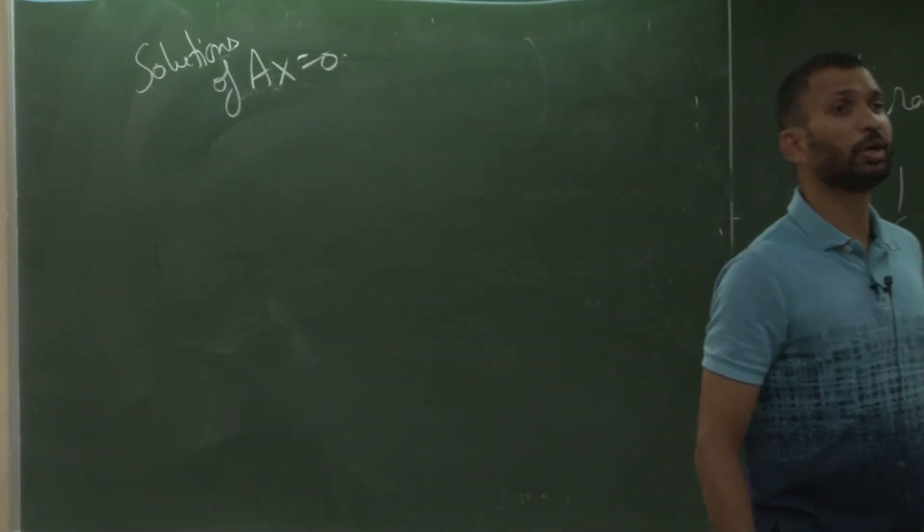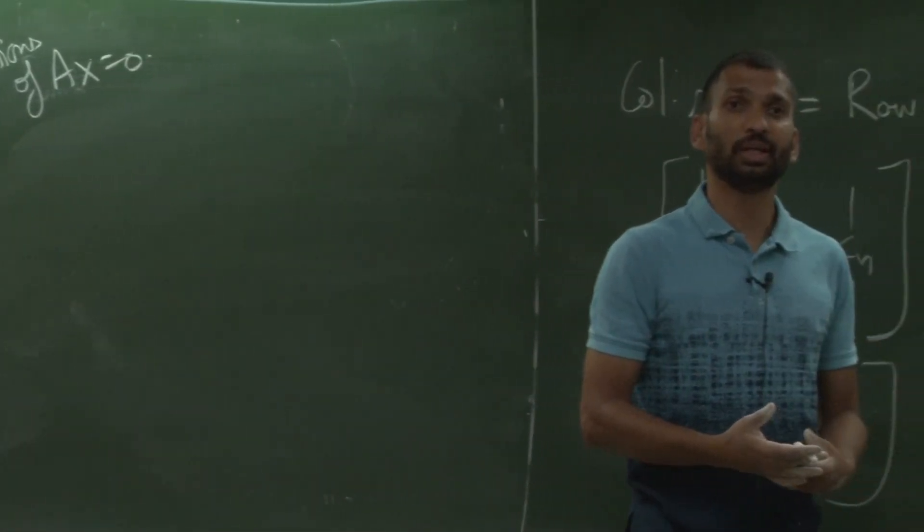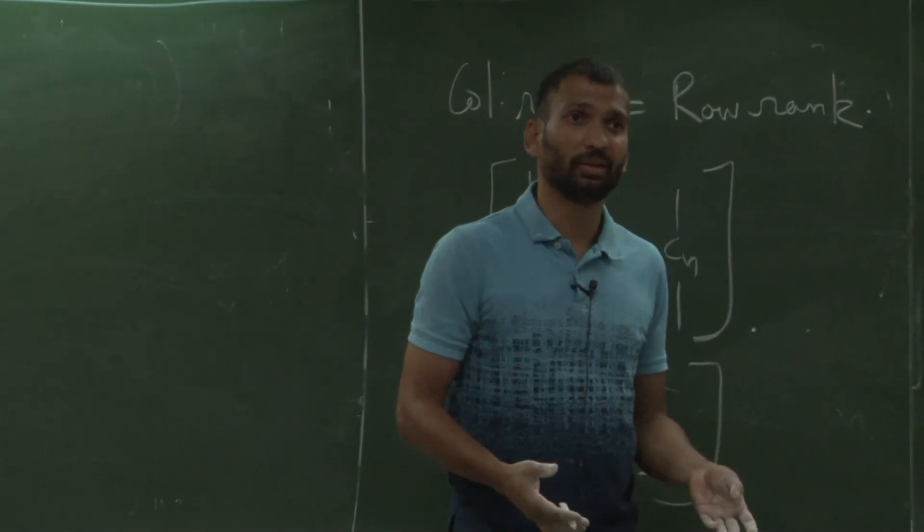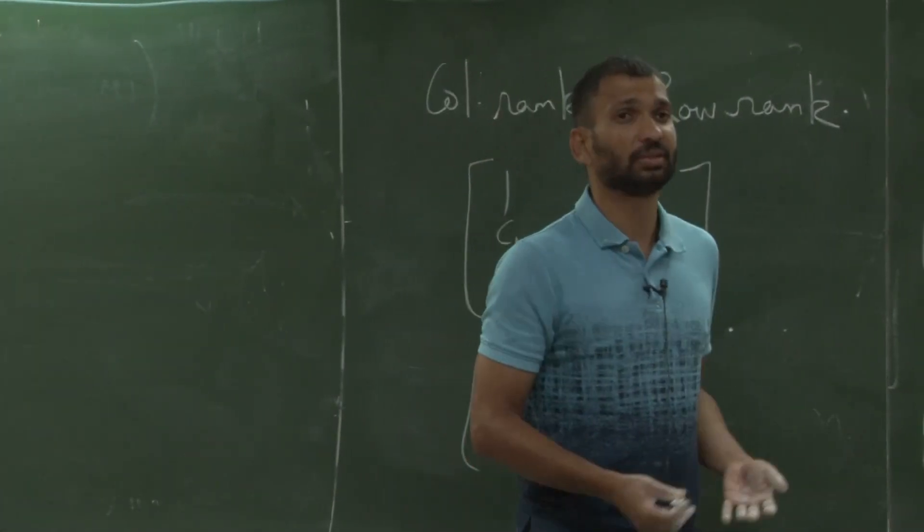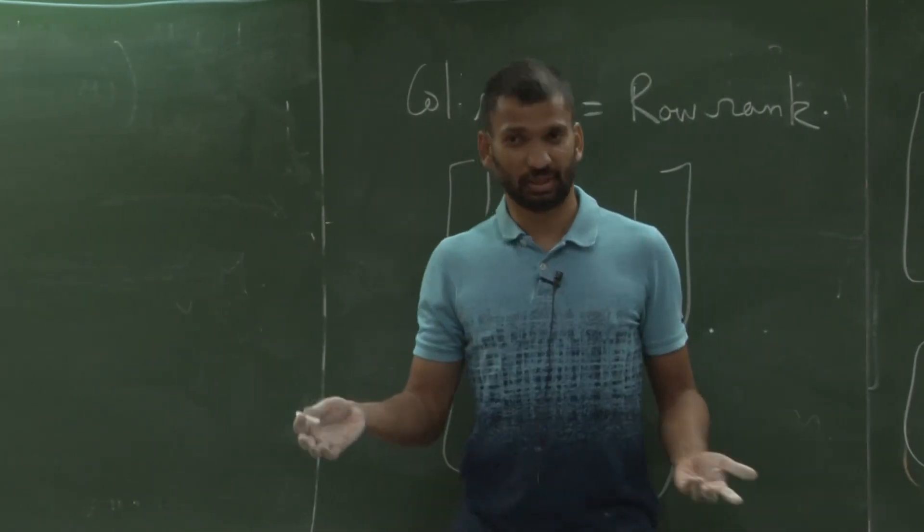Remember our old problem, we wanted to find out solutions of Ax equal to b and b equal to 0, in some sense the simplest case. This is talking about the kernel of A.